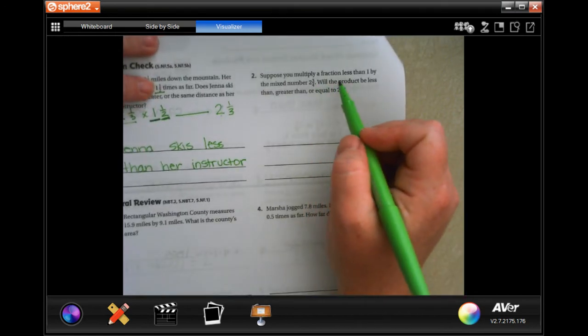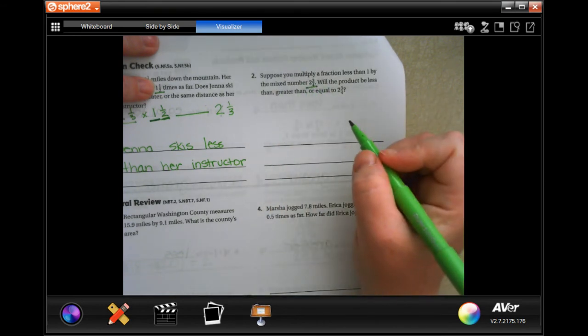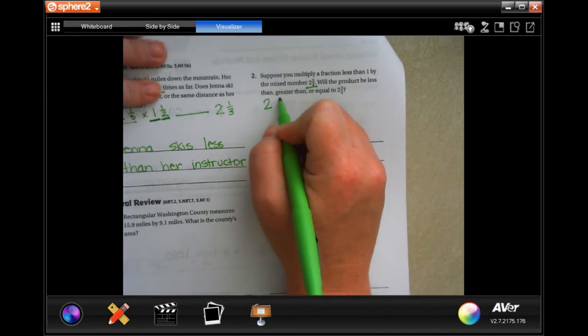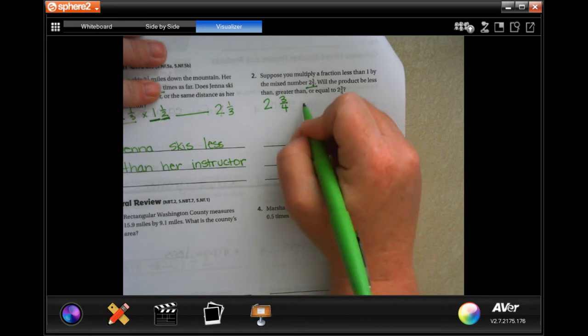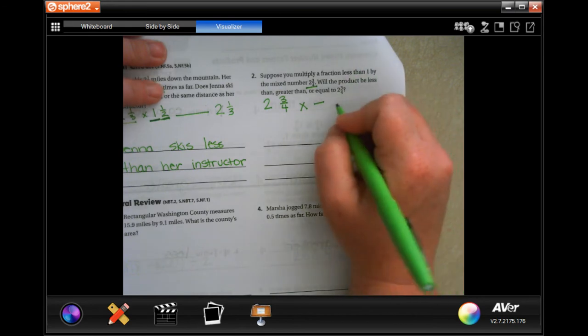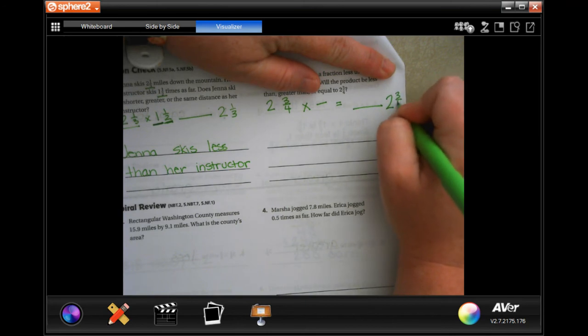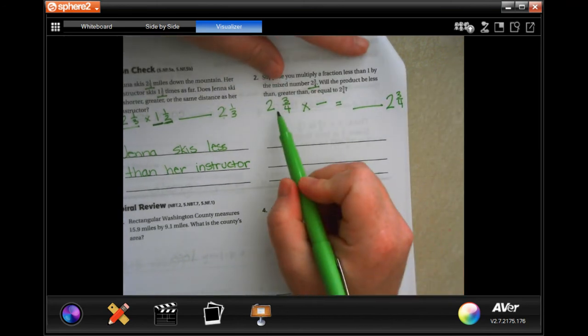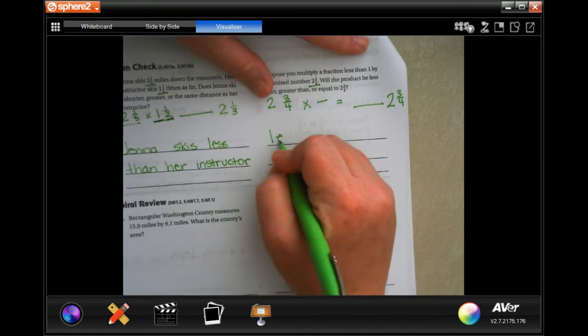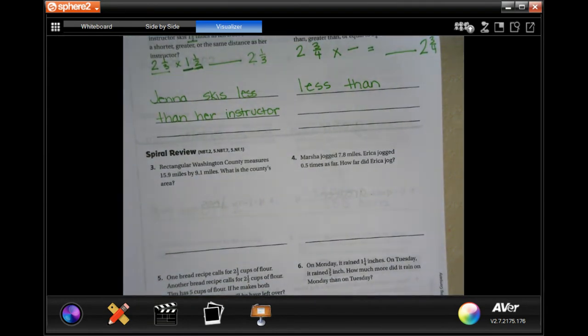Suppose you multiply a fraction less than one by the mixed number two and three-quarters. Will the product be less than, greater than, or equal to? So, would they want us to multiply a whole number with a fraction by a number less than one? So, by just a fraction. Is that going to be greater than or less than the two and three-quarters? Well, we know when we multiply a whole number with a fraction with a number less than one, it's going to be less than.